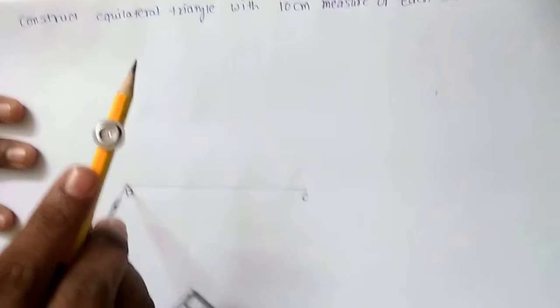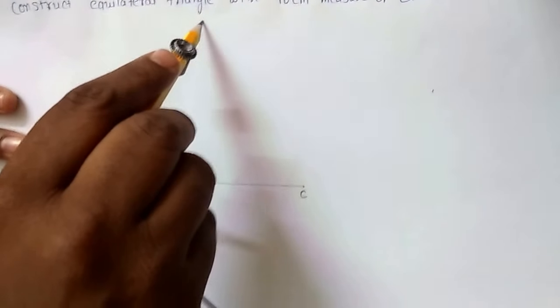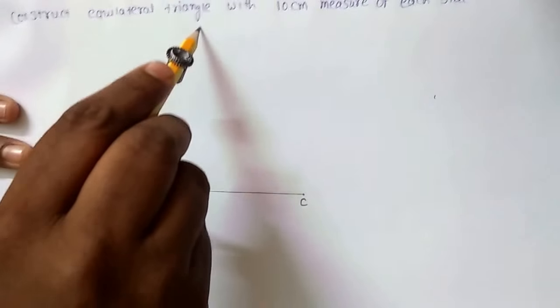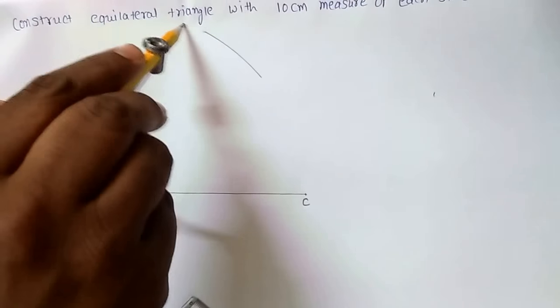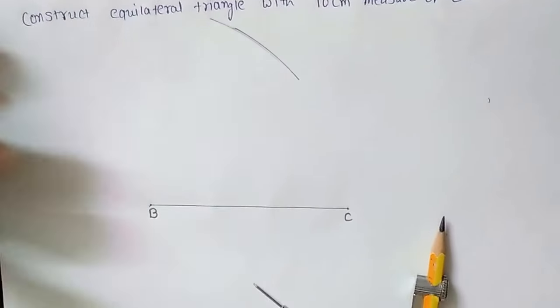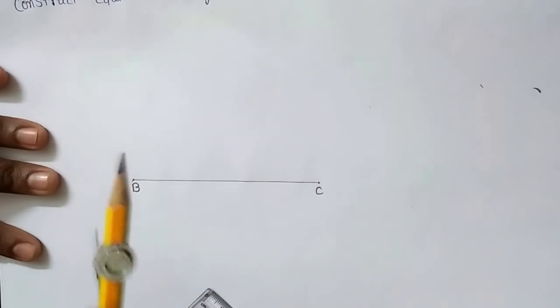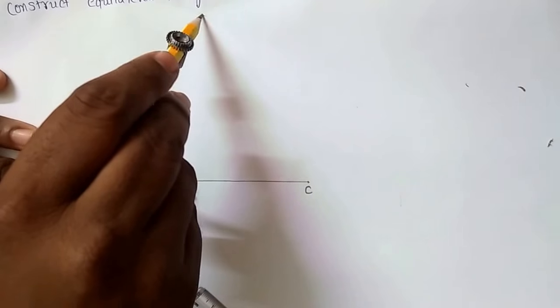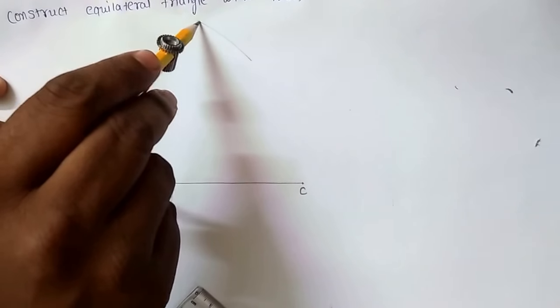Now I will keep the point on B and I will draw the arc over here. Let me keep it properly. This way. I will keep it properly, otherwise the side will be not of measure proper. So I will keep point over here and then draw the arc.